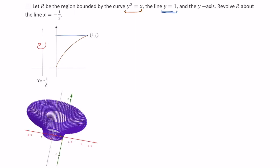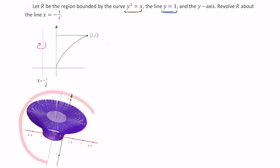This screenshot is based on that little video you just watched. The video actually showed you the process of this whole region being rotated about the line x equals negative 1 half. And we're going to use the method of cylindrical shells to find the volume of this solid.